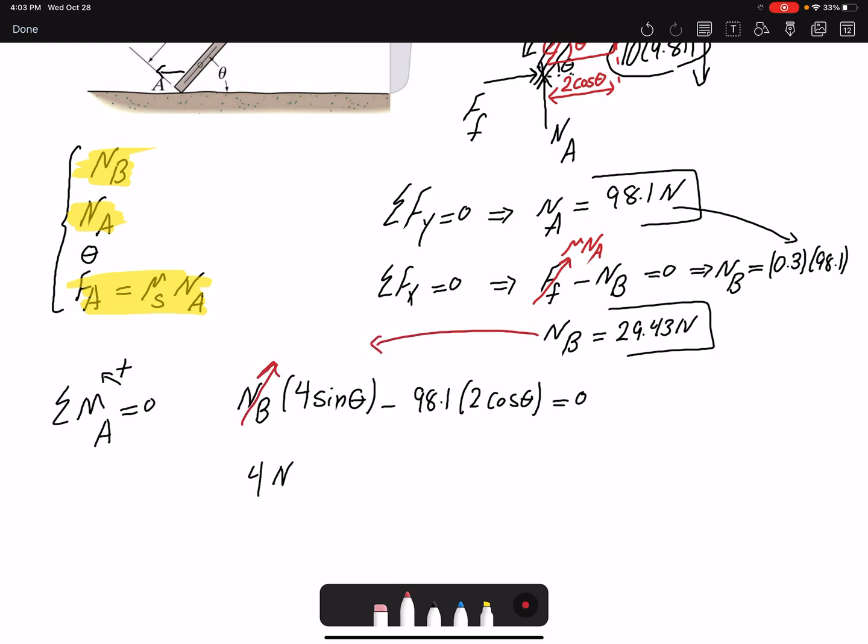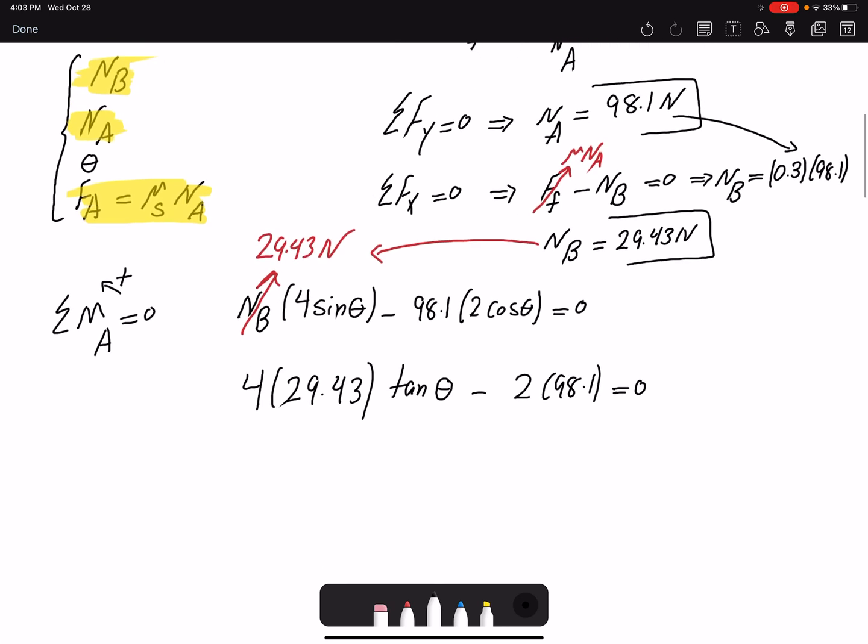So I have 4 times 29.43. If I divide everything by cosine theta, I get tangent theta minus 2 times 98.1 equals zero. If I rearrange the equation and find tangent inverse, I will find theta to be 59.30 degrees.